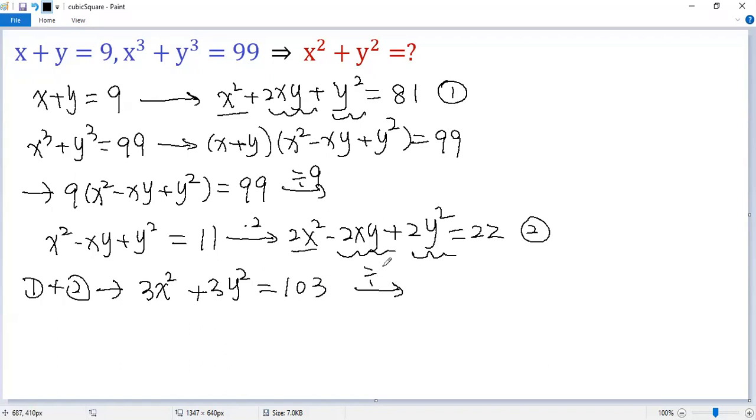Both sides divided by 3. So we get x squared plus y squared equals 103 divided by 3. That is the final answer.